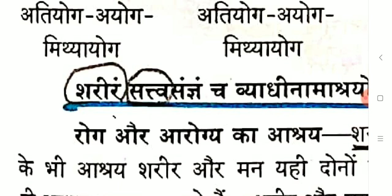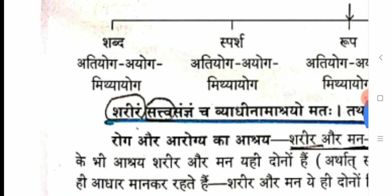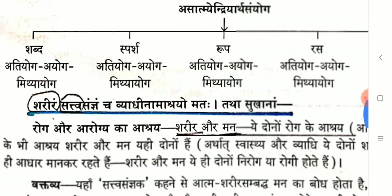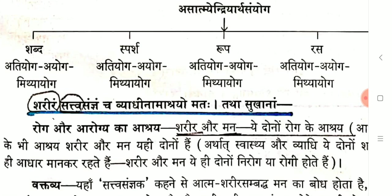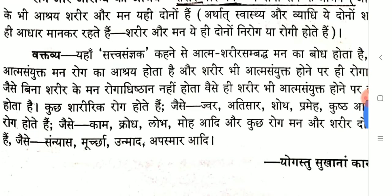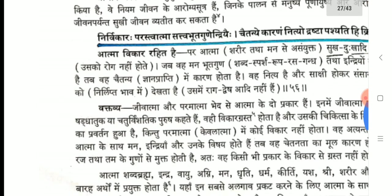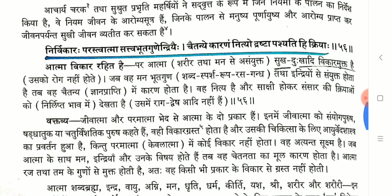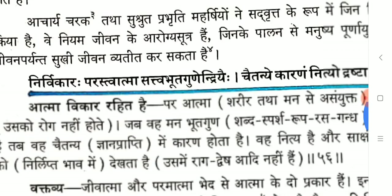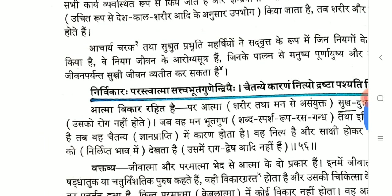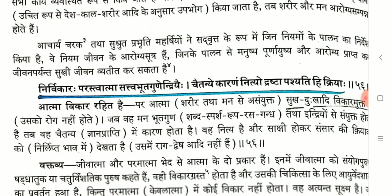The word Sattva will make questions tricky, so we need to understand it properly. Charaka has mentioned Sharira and Sattva as the Roga Adisthana. Atma is not Adisthana for Roga because it is Nirvikara.